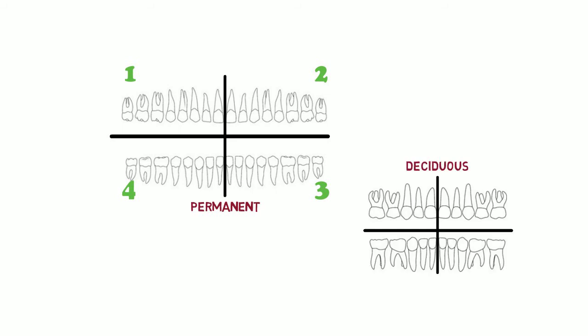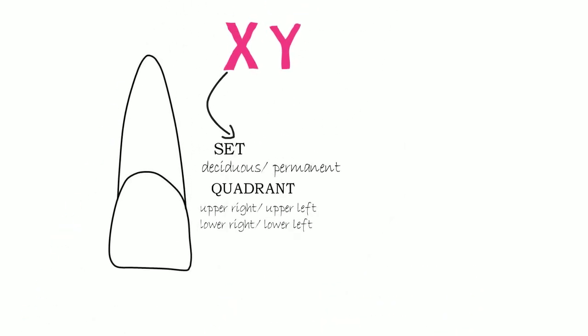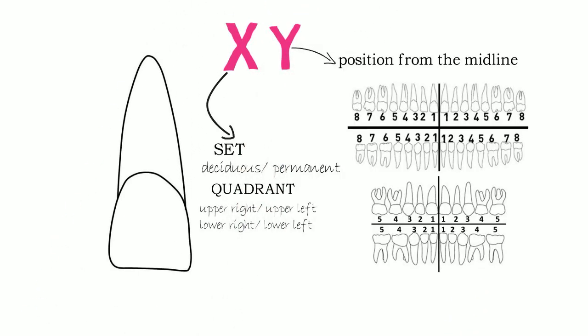Whereas in deciduous dentition, numbers 5, 6, 7, 8 depict the four quadrants. Now, the second digit tells us about the position of the tooth in that particular quadrant.